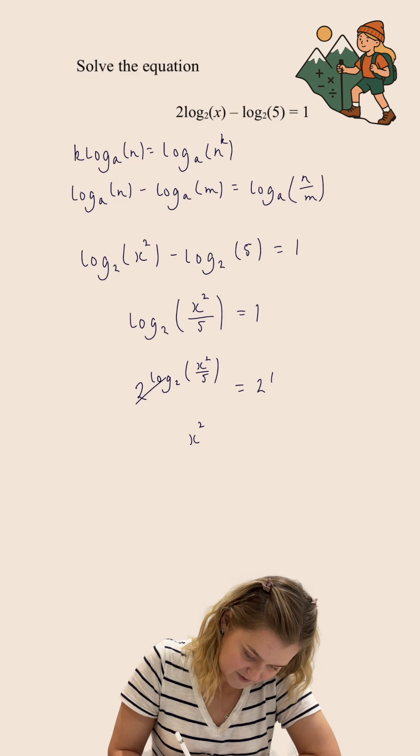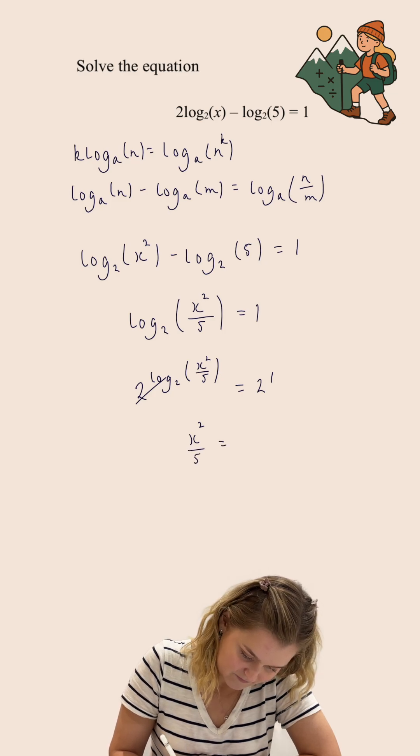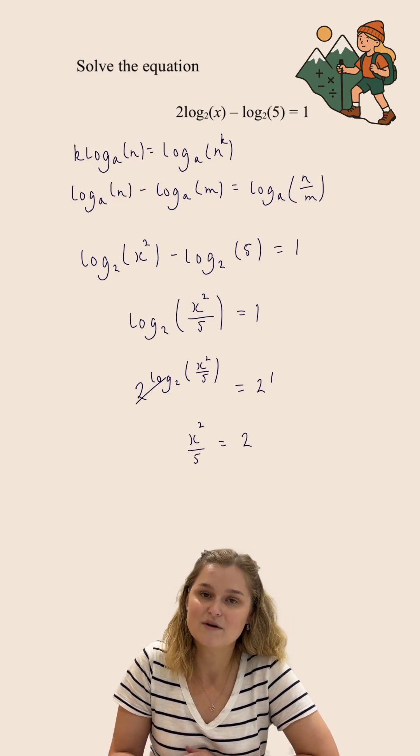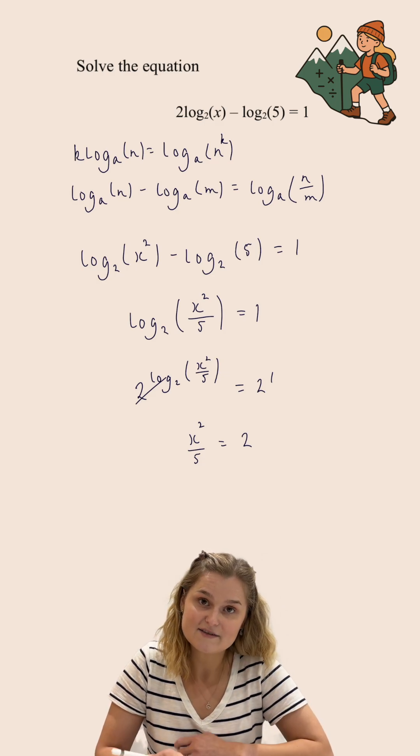So I've just got x²/5 equals 2 to the power of 1, which is just 2. Now I'm trying to figure out x.